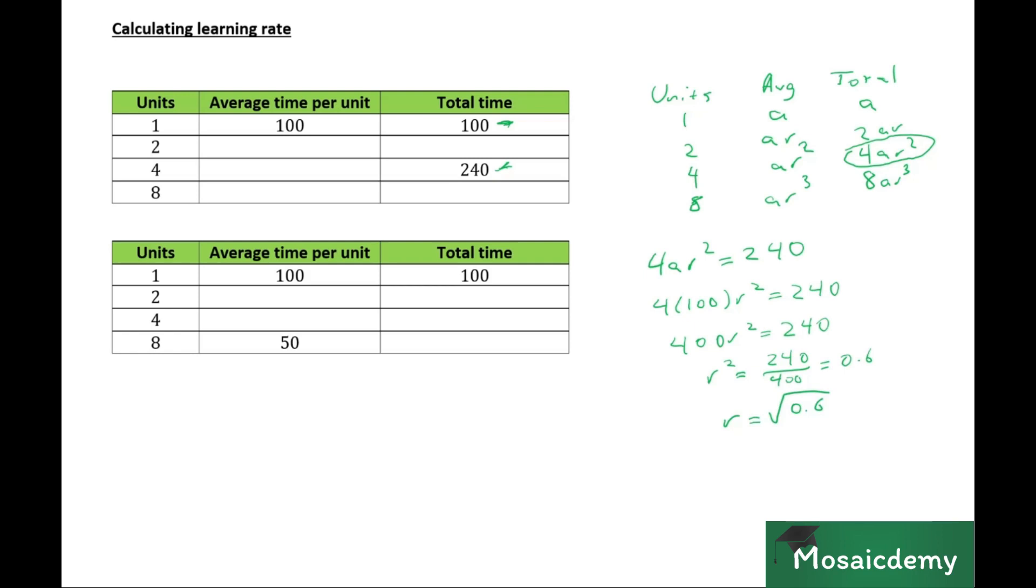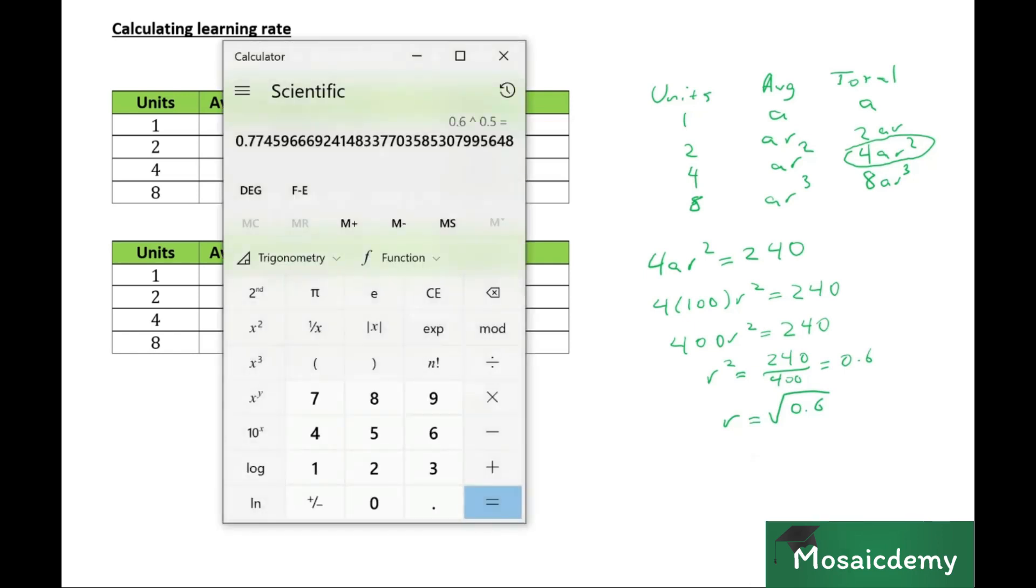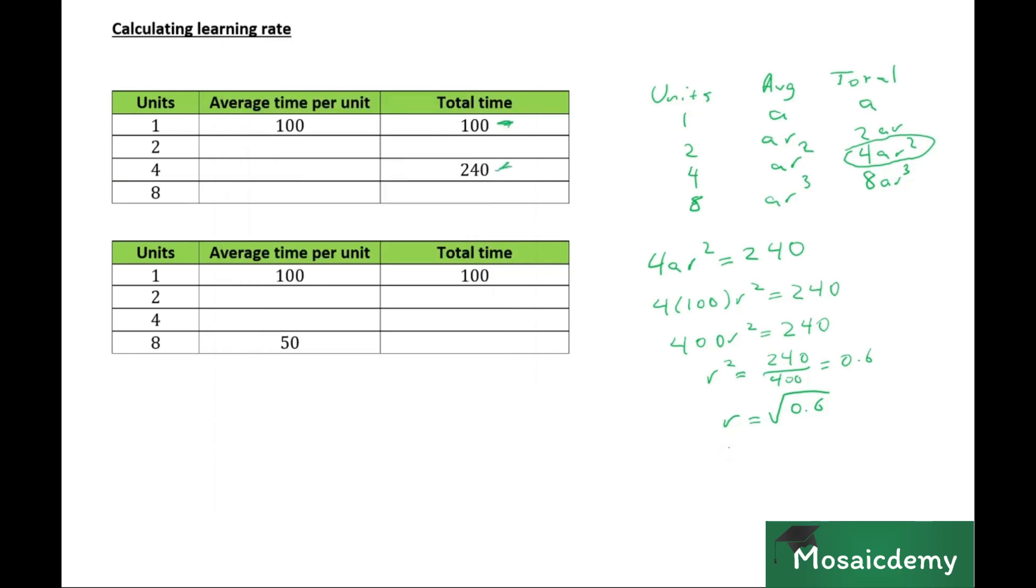And R is equal to the square root of 0.6. We can use a calculator to find that out. So the square root of 0.6 would be 0.774.